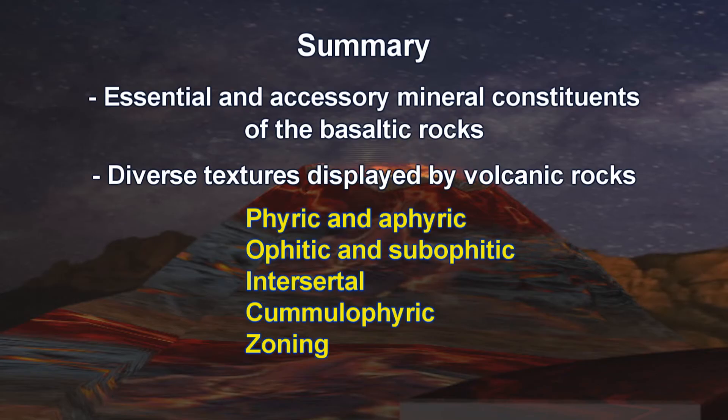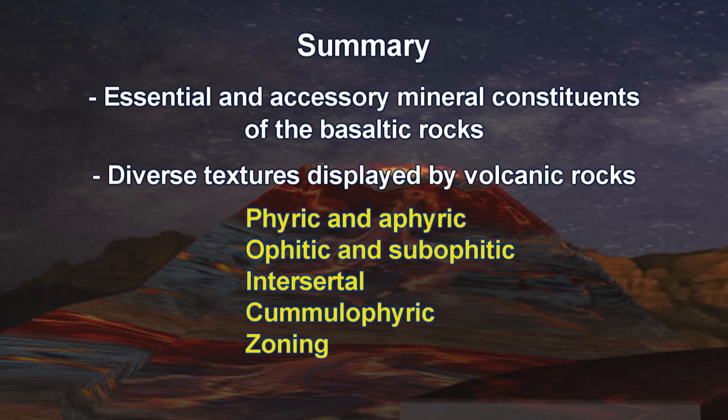So far, I have discussed the interesting aspects of Deccan volcanism — its origin, various topographic and field features, and how these rocks can be seen through the eyes of the microscope. Let us summarize what we have learnt. We briefly learnt about essential and accessory mineral constituents of basaltic rocks, and discussed the diverse textures displayed by volcanic rocks — such as phyric and aphyric, ophitic and sub-ophitic, intersertal, cumulophyric, zoning, and many more. Thank you very much.